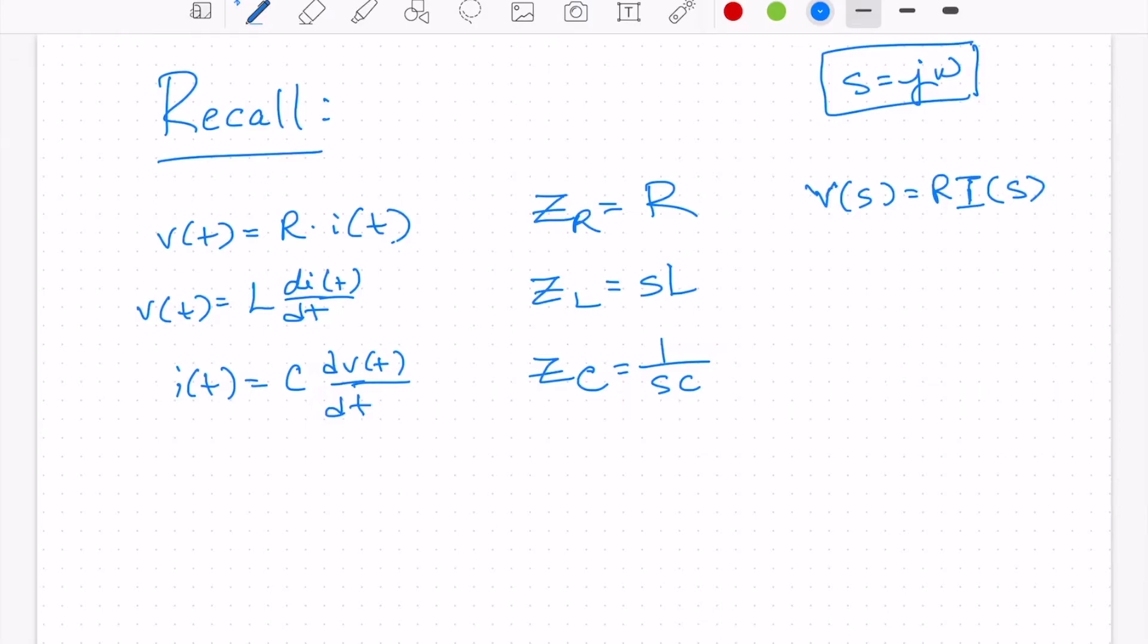For the inductor, we have V of S is equal to L times S times I of S. And for a capacitor, we have V of S is equal to 1 over SC times I of S.